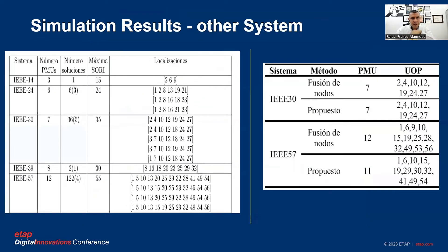For comparison, other systems were tested. For the IEEE 30-bus system, this methodology requires 7 PMUs, while another published methodology requires 12 PMUs for the same system — demonstrating the efficiency of this approach.